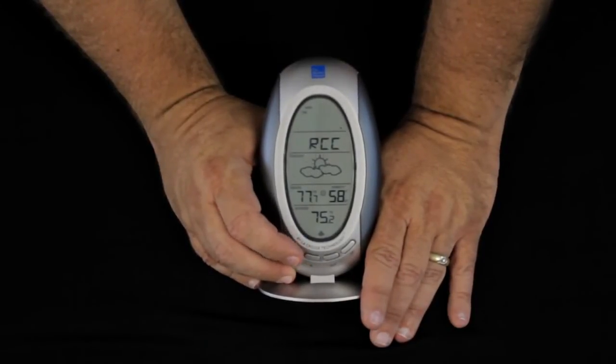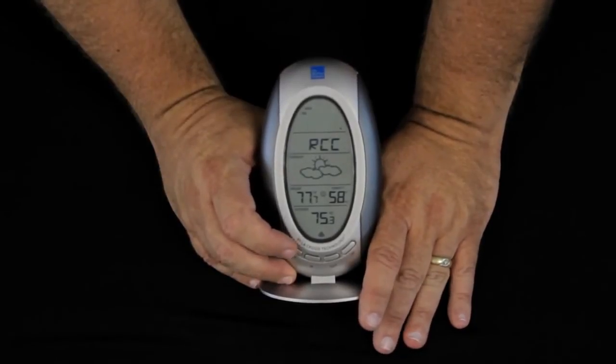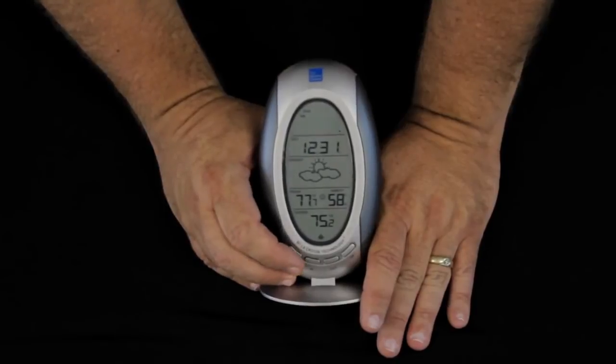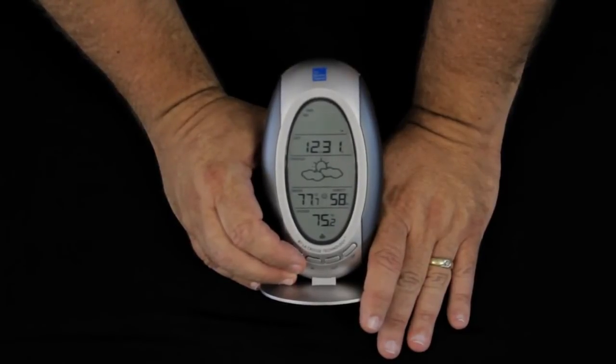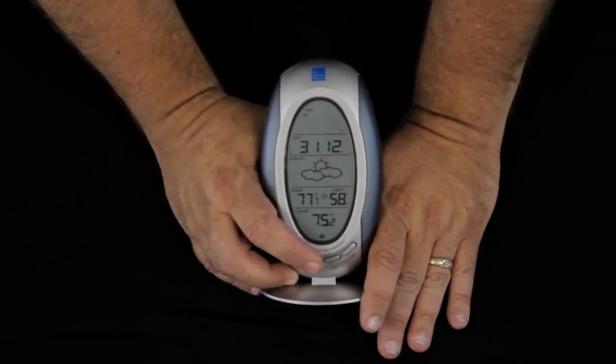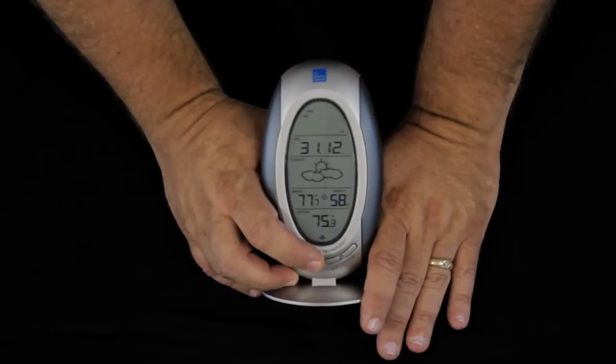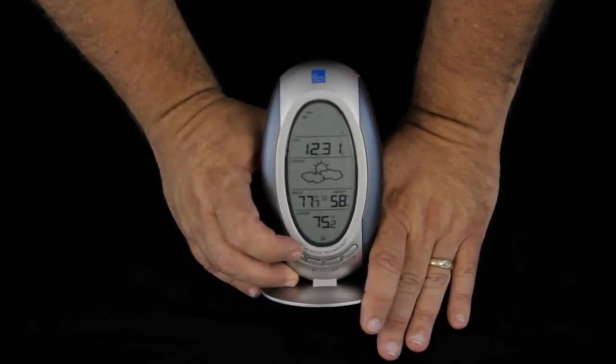Pressing the set button once again. RCC on means that it's going to be radio controlled, set the time automatically. If you wish, the in button will turn that off. We press again. We're in 12 hour mode. We can go to 24 hour military time if we wish, in which case the date shows in the opposite direction, day first and then month. We'll leave it in 12 hour.